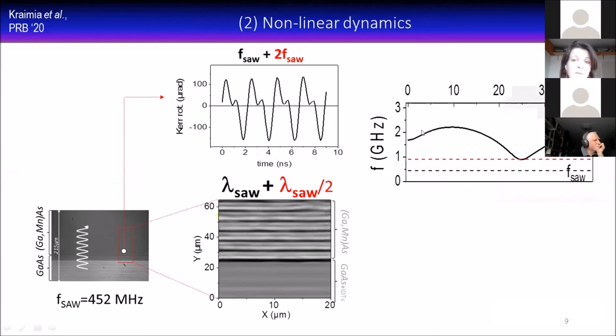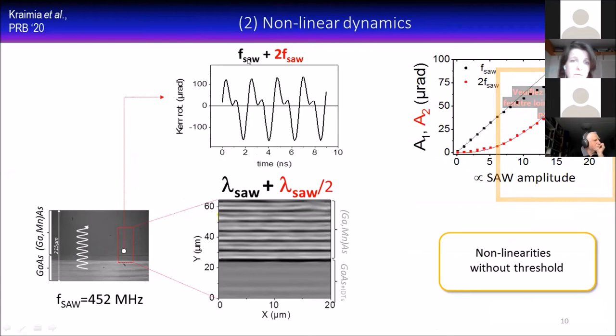What we also noticed is that at certain temperatures and fields such that the precession frequency started to get nicely close to two f SAW, we could get the second frequency appearing in the time domain. You see this second frequency and also in the spatial domain. You see we don't have just one SAW period, we also have lambda SAW over two. Likewise, we can monitor the amplitude of the signal, the f SAW contribution and the two f SAW contribution.